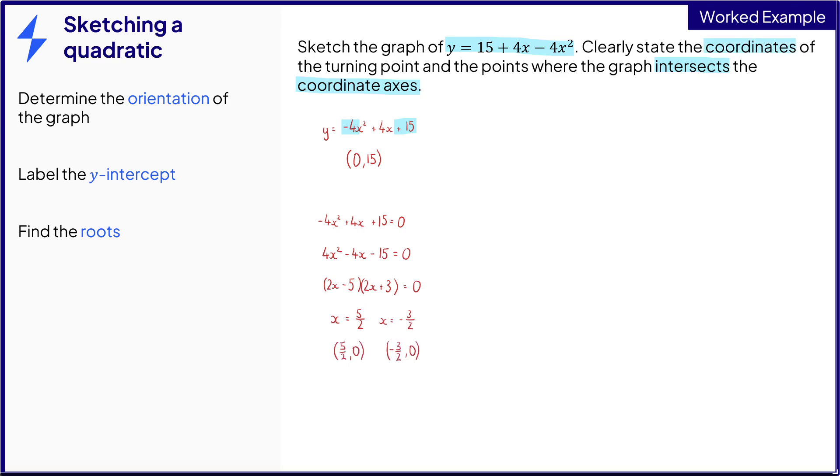Next, we need to find the coordinates of the turning point. And to do this, we need to complete the square. And once it's written in that form, we can easily read off the x-coordinate, which is just a half, because that makes the bracket equal to 0, and y is just 16, because when the bracket's 0, we're just left with 16. So we now have the coordinates of the maximum point.